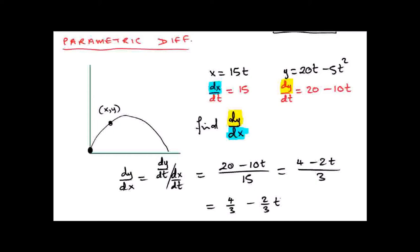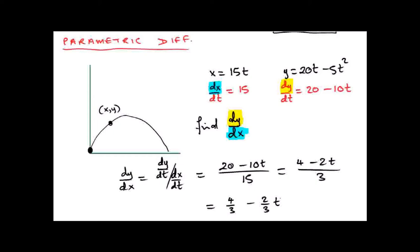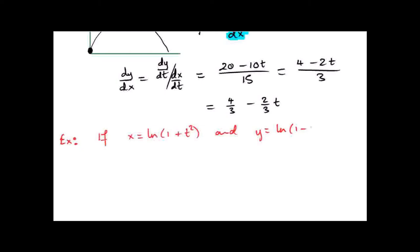I'm just trying to give you an application to show how these things would work. Anybody doing physics or applied maths will realize you always find things in terms of t, and it would be too much hassle to turn it back to y's and x's. So the handiest thing is: differentiate x, differentiate y, and then just divide your two answers. Next example — this is more towards a leaving cert question. If x equals the log of 1 plus t squared and y equals the log of 1 minus t squared, find dy dx.